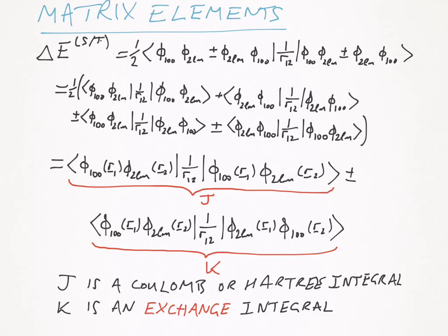The second term, however, is rather different. So this is often notated as k, and notice that the functions of R1 change. So in the bra, we have phi100 of R1. In the ket, we have phi2lm. And the same is true for R2. In the bra, we have phi2lm. And in the ket, we have phi100. So this integral is known as an exchange integral, and it arises purely from quantum mechanics. It's there because we have to have the anti-symmetry of the overall electron wave function.